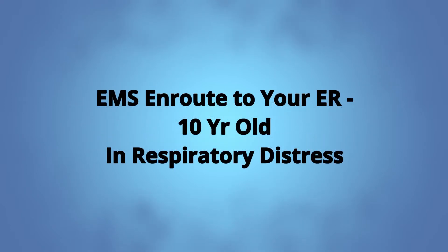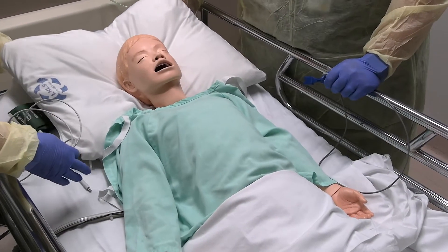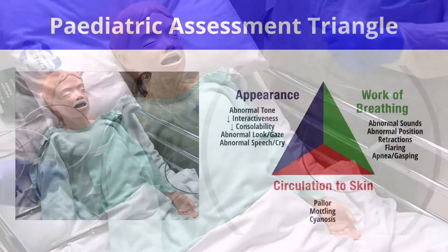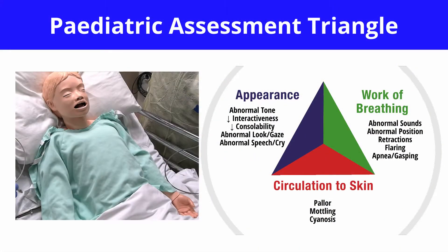You receive a patch from EMS that they are en route to your emergency department with a 10-year-old child in respiratory distress. The first thing you are going to review is the pediatric assessment triangle, which is your initial impression of the child. This will help determine the level of support that may be required, including calling for additional help from a respiratory therapist, nursing, or a physician. Remember, this is your at-the-door initial impression.